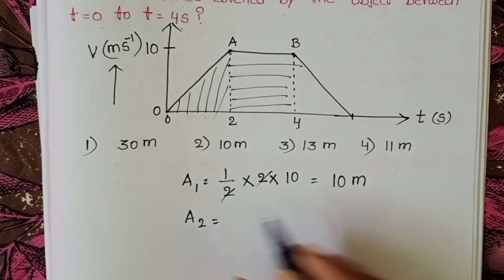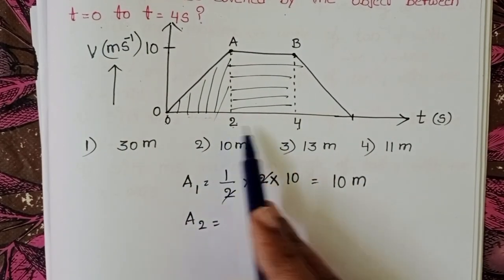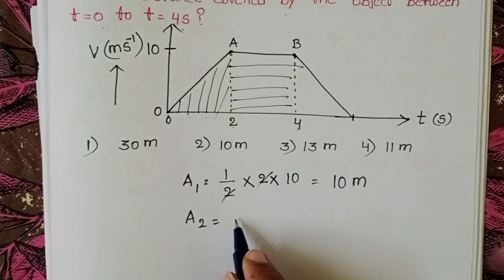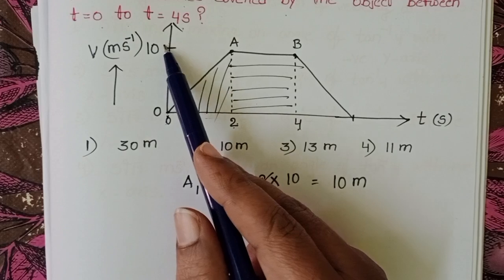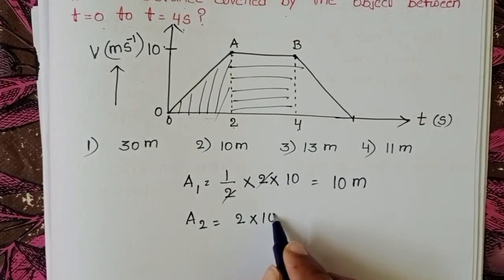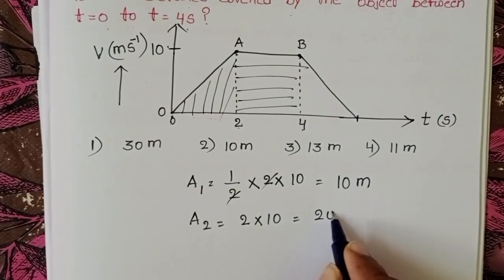A2 equals - this is a rectangle. 2 to 4, it becomes 2. 4 minus 2 equals 2, 2 into, and here from 0 to 10 only, into 10. 2 into 10 equals 20 meters.